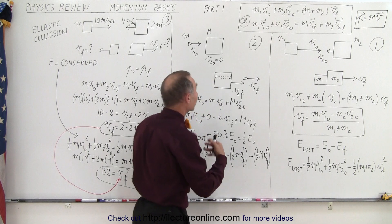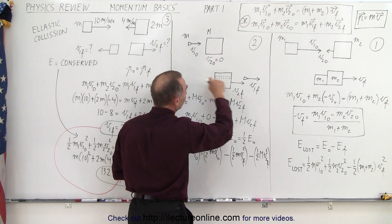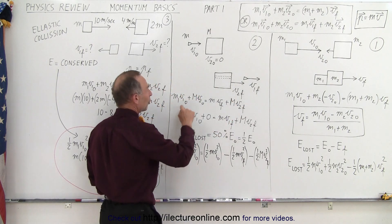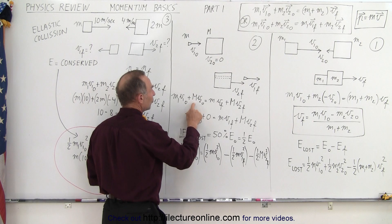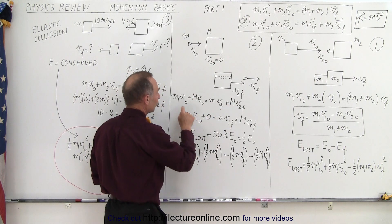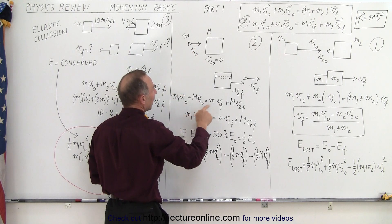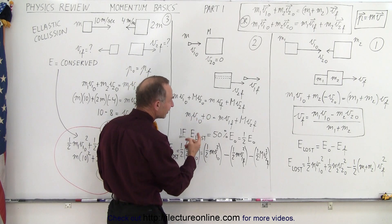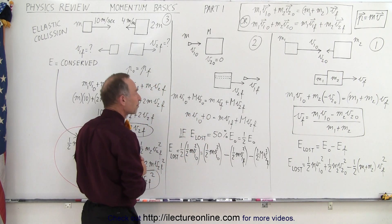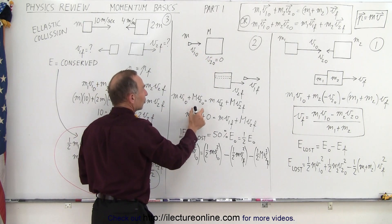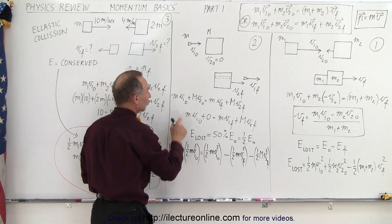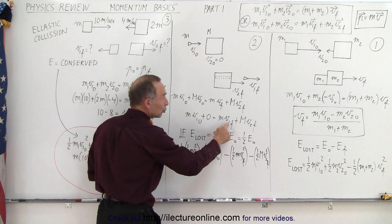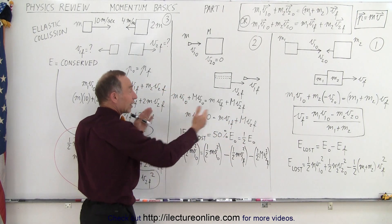What if they don't stick together? In example two, a bullet is fired into a wooden block and goes through it, continuing out the other side — so there's a collision but now we have two final velocities. The equation becomes M1V1 initial plus M2V2 initial equals mV1 final plus MV2 final, using small m for the bullet and big M for the block. Since the block was not moving initially, that term goes to zero. If we know the bullet's initial velocity and mass, we still have two unknowns for the final velocities and cannot solve this with one equation alone.